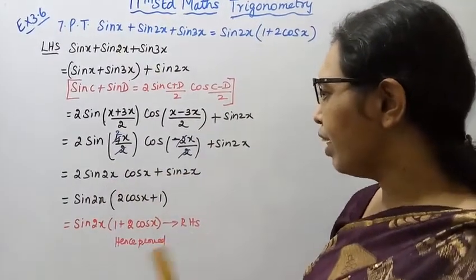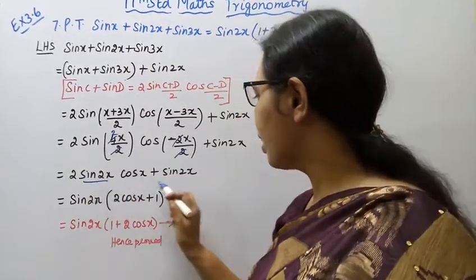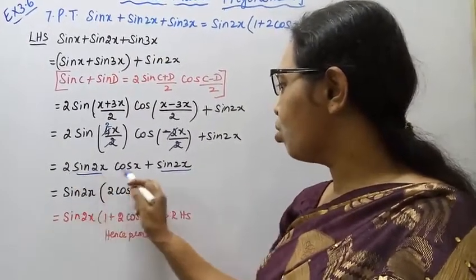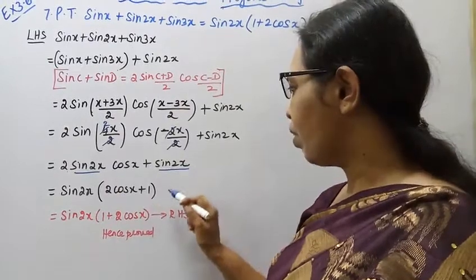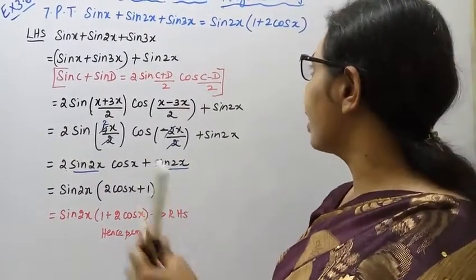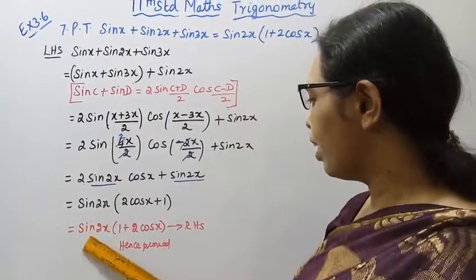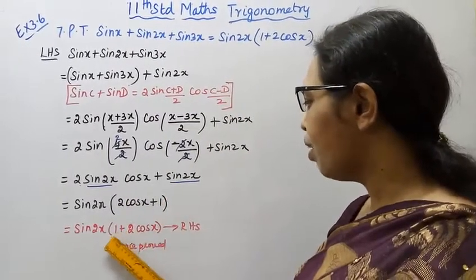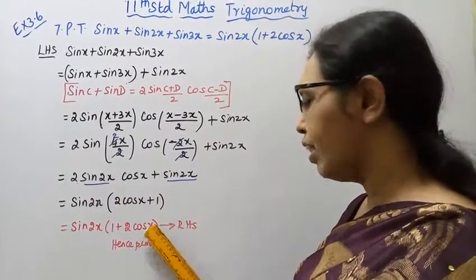Taking sin 2x as common: sin 2x times 2 cos x plus 1. Rearranging this gives us sin 2x times 1 plus 2 cos x, which equals the right hand side.